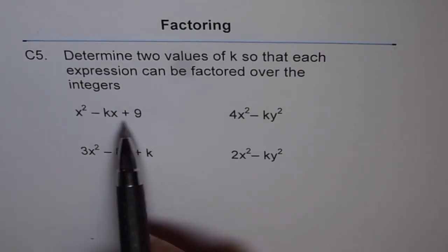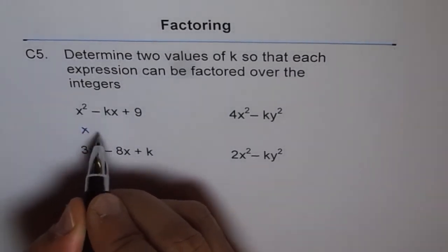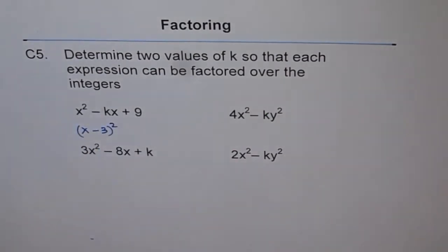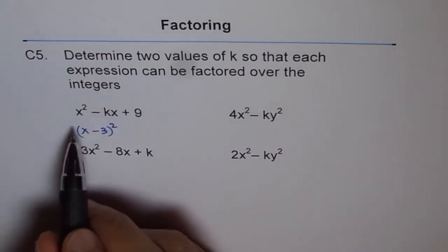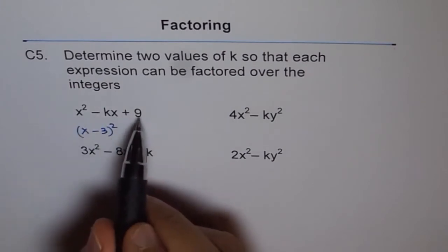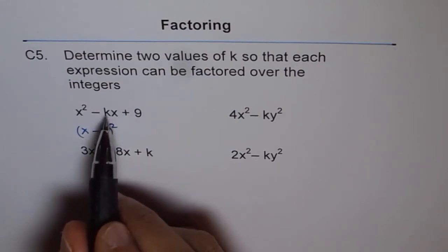If this is 3 square, I can write this as x minus 3 whole square. This is one option. So if I write x minus 3 whole square, the center number should be 2 times ab. A here is 1 and b here is 3, right? So in that case, 2 times 3 will be 6.